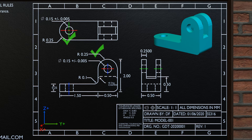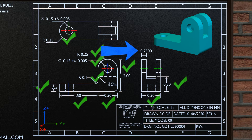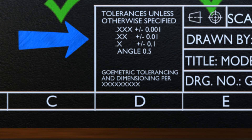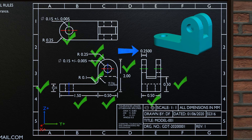We'll also check for the rest of the dimensions and see if they are in line with the first fundamental rule of 'each dimension shall have a tolerance.' When we look at this dimension, we can see that it has four decimal places, and the comment does not have tolerance for dimensions with four decimal places. So, this dimension is not in line with the first fundamental rule.